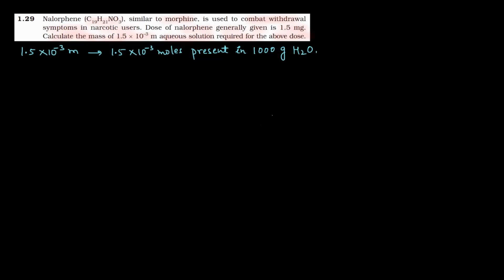That means solvent. Now, can we find the mass of these moles? For C19H21NO3, we calculate the molar mass: 19 × 12 (carbon) + 21 (hydrogen) + 14 (nitrogen) + 3 × 16 (oxygen). Calculating this gives us 311 grams per mole as the molar mass of Nalorphine.